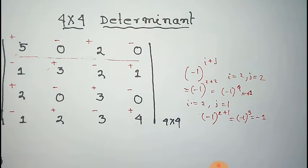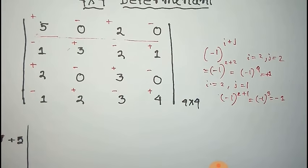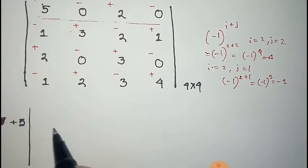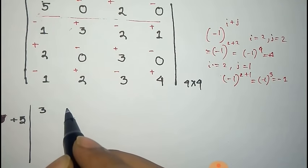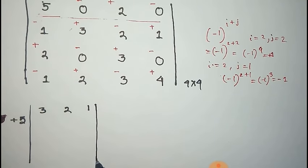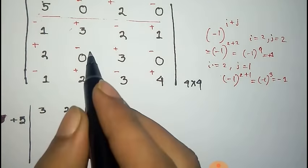For the element 5, we cancel the row and column containing 5 and write the remaining 3x3 determinant. The remaining determinant has elements: 3, 2, 1 in the first row; 1, 0, 0 in the second row; and 0, 0, 0 in the third row.